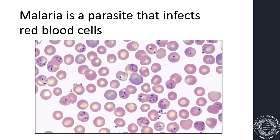Malaria is a parasite that infects red blood cells. This microscope picture shows red blood cells from a human. Each of these little circles is a blood cell, and the lighter portion is a nucleus. You'll notice purple dots in some of them — those are malaria parasites at different stages of their life cycle.